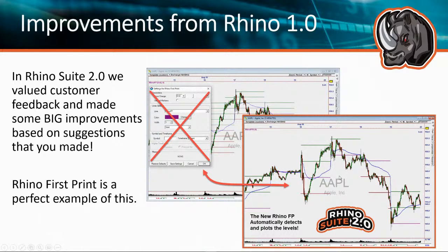That's one of the big changes. Both versions are included — if you get Rhino Suite 2, you still have the original, which is still really good and gives you a lot of micro levels for the smaller moves. But with this new calculation, you're getting the true market structure levels over and over. And you no longer have to do anything — these are automatic on every chart, just available from now on.